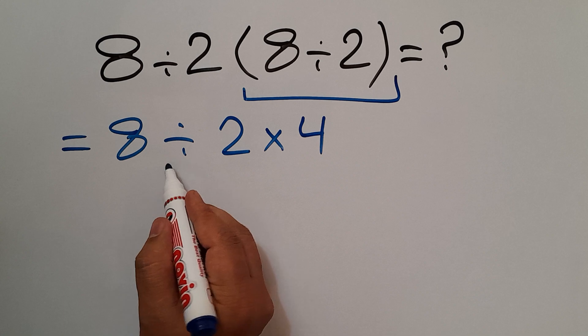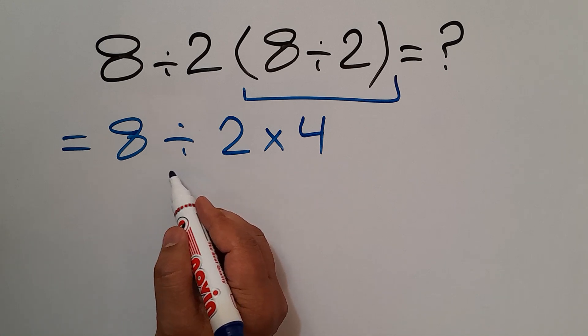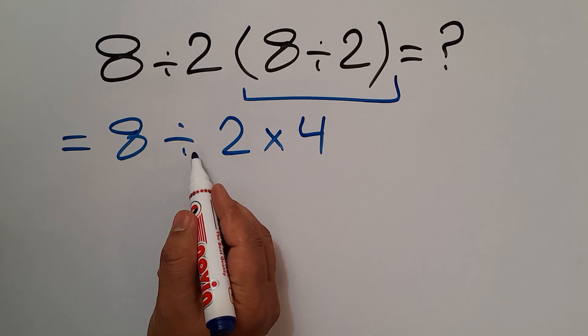As we know, multiplication and division have equal priority and we have to work from left to right. So first, this division: 8 divided by 2 gives us 4.